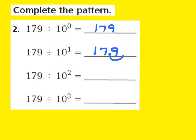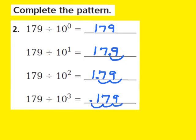For the next part, I have 179 being divided by the second power of 10. My exponent is a 2, so I'm going to move the decimal two places to the left — once, twice — and my answer turns out to be 1 and 79 hundredths. Now for the last part, 179 divided by the third power of 10 — my exponent is a 3, so I move the decimal three places to the left: one, two, three. My answer turns out to be 179 thousandths.